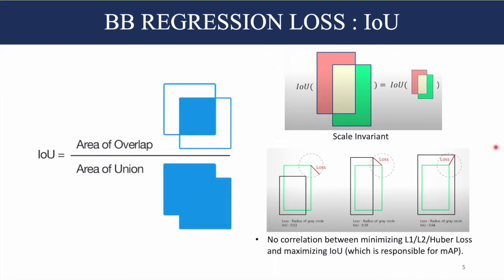However, there is a problem with IOU: there is no correlation between minimizing an L1, L2, or Huber loss and maximizing the IOU, which governs the average precision or mean average precision. As shown in the figure, all points on a circle would have the same L1, L2, or Huber loss, but in all three cases the IOU is different — meaning there is no correlation between the two.